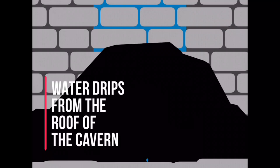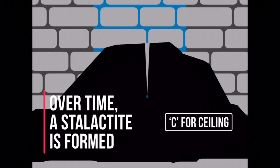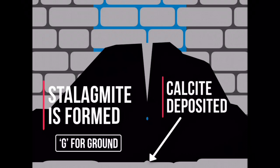Water drips from the roofs of these caverns. Each drop deposits a small amount of calcite from the dissolved limestone. Over thousands of years, this builds up to form a stalactite hanging from the roof or ceiling of the cave.